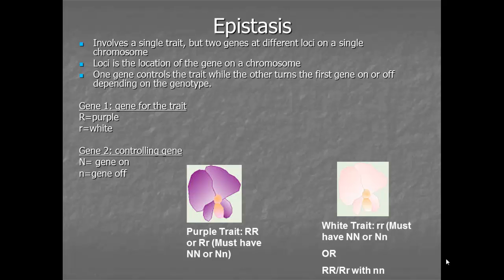Continuing on with our more special or unique forms of genetic situations, we're going to talk about something called epistasis. We're actually getting into what real-world genetics problems are more like. Most genetics aren't run on simple, incomplete, or complete monohybrid crosses. Gregor Mendel was lucky that he was studying pea plants where that was the case, and so he was able to figure out the basis of genetics. But the more we study, the more we find that these are the more realistic situations.